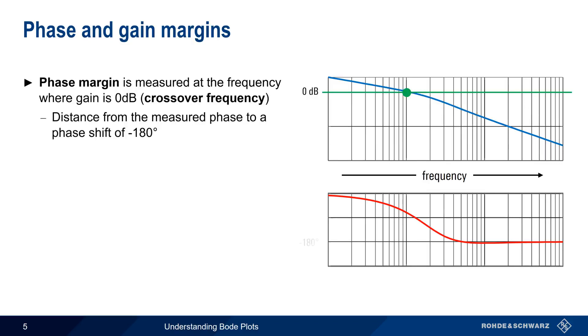Phase margin is a measure of the distance from the measured phase to a phase shift of minus 180 degrees. In other words, how many degrees the phase must be decreased in order to reach minus 180 degrees.